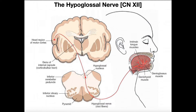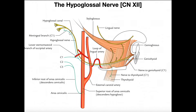The hypoglossal nerve exits the cranium inferiorly through the hypoglossal canal. You can see here that the nerve exits through that canal, and that's how it gets out of the cranium.